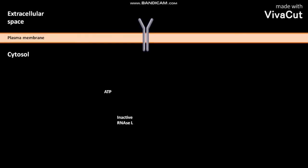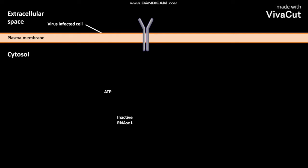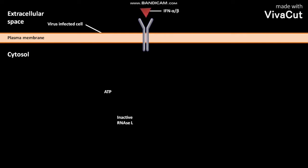This is a virus-infected cell. During the viral life cycle, double-stranded RNA (dsRNA) is produced. The dsRNA induces the expression of IFN-alpha and IFN-beta by the virus-infected cell.